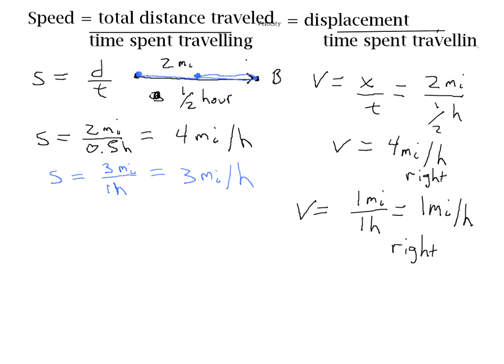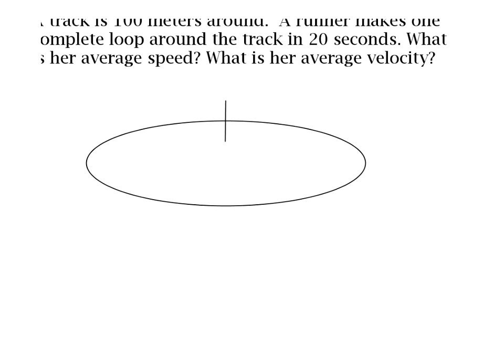I'm now going to give you a chance to check your understanding. I'm going to set up a question and I want you to answer it on your own before you reveal the answer. The question is: we have a track that's 100 meters around, and a runner makes one complete loop around this track in 20 seconds. Find her average speed and her average velocity. Pause the video, work it out yourself, and unpause when you're ready for the answer.